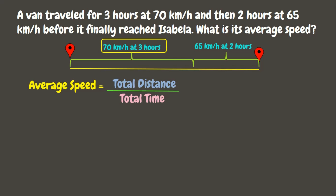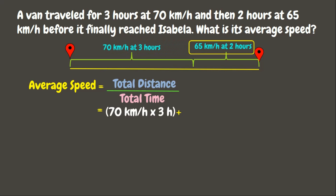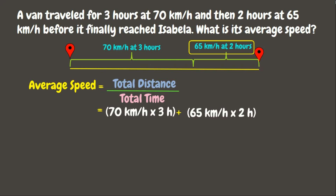In the first given, we have 70 kilometers per hour at three hours. To get the distance, we multiply speed by time: 70 km/h × 3 hours, plus the distance of the next given — 65 km/h at two hours — so that will be 65 km/h × 2 hours. For the total time, we simply add up all time consumed: 3 hours plus 2 hours.